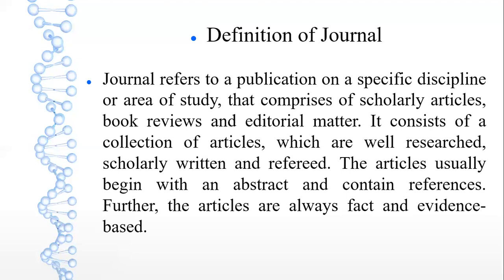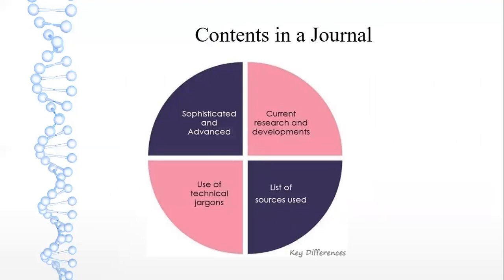Now, the contents of a journal include current research and developments, and current trends within a discipline. There is a list of sources used — that is, references. Journals also use technical jargon, as every discipline has its own technical terms. Medical terms and engineering terms are different from library science and social science terms. Research-based journals are published at sophisticated and advanced levels.